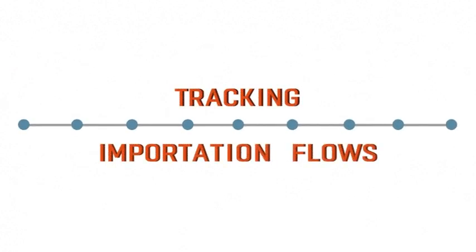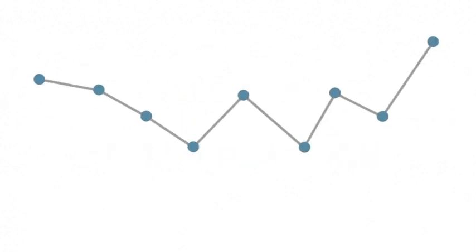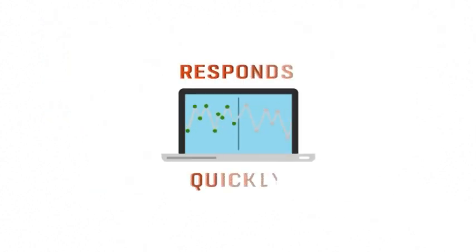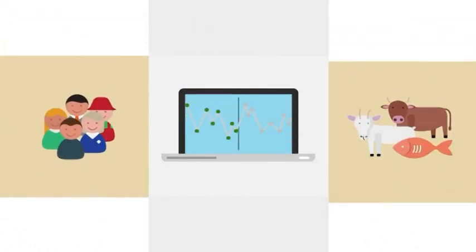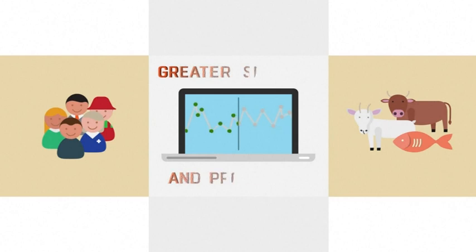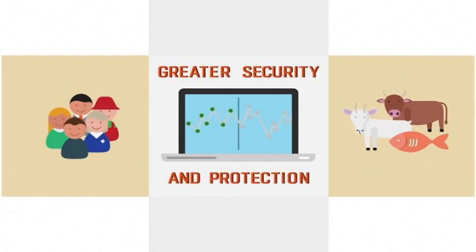By tracking importation flows precisely, however complex a route might be, TRACES can respond quickly to problems, providing both consumers and livestock with greater security and protection.